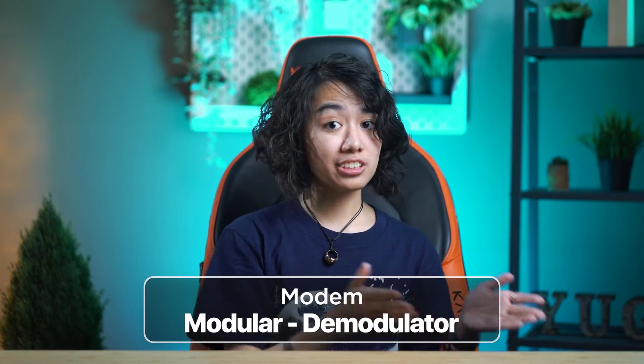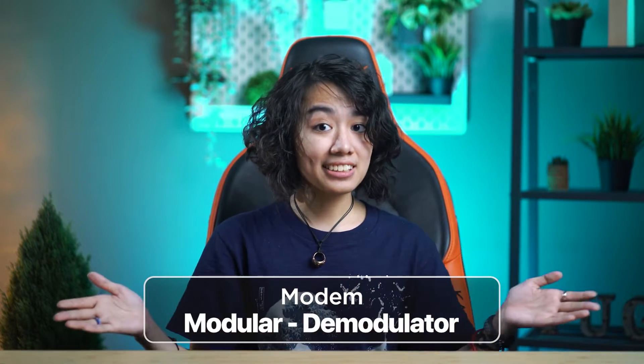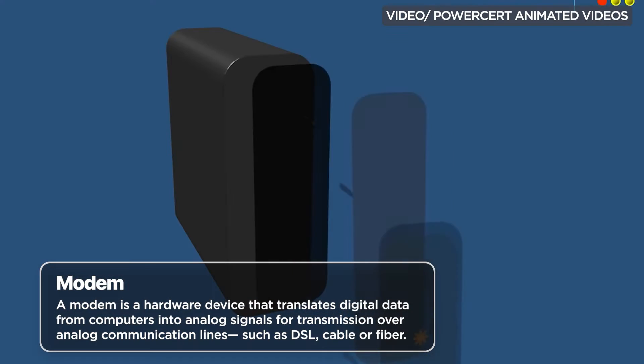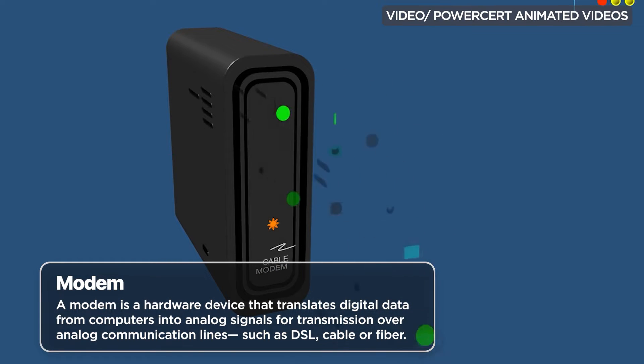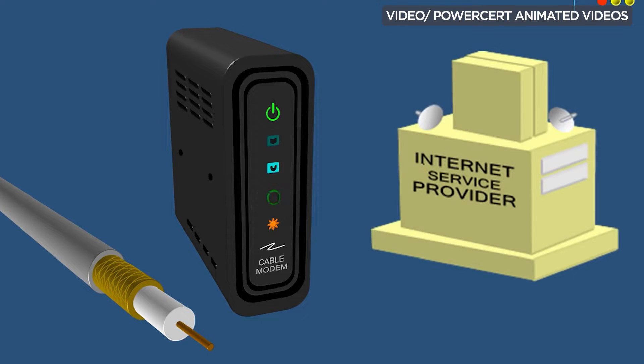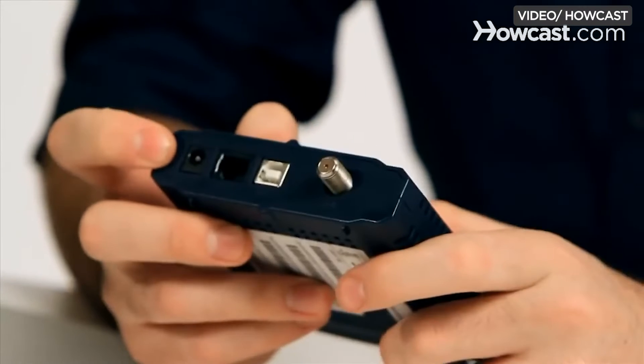Let's kick things off with the most basic part of your network setup, and that's the modem. A modem, short for modulator-demodulator, is the device that connects you or your home to your ISP. It's responsible for receiving data from your ISP, often via a wired connection through a coaxial cable, DSL copper cable, or fiber optic cable. Simply put, it's the bridge or gateway between your ISP's network and your home network.